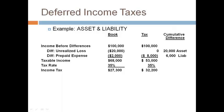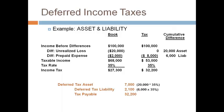First, credit tax payable for the amount at the bottom of the tax column — this is the amount the IRS requires the company to pay. Second, record the deferred tax asset and the deferred tax liability. The amount is the cumulative book-tax difference multiplied by the future tax rate. Since this is the first year, the cumulative difference is the same as the current year difference. The payable and the expense are multiplied by the tax rate, so the differences must also be multiplied by the tax rate. The last step is to record tax expense for the amount that balances the journal entry, which equals the amount at the bottom of the book column when the tax rate does not change in the future.